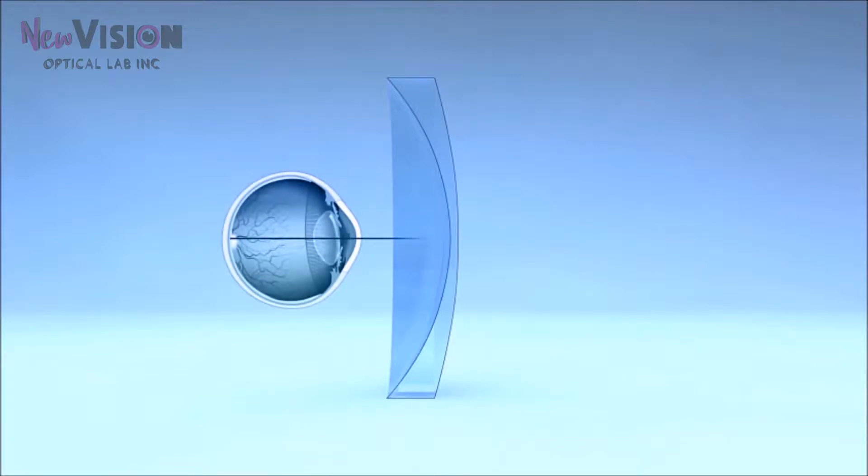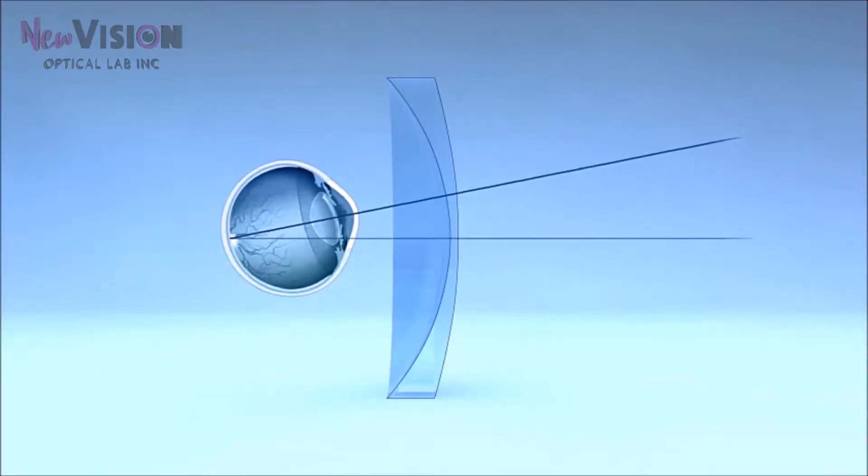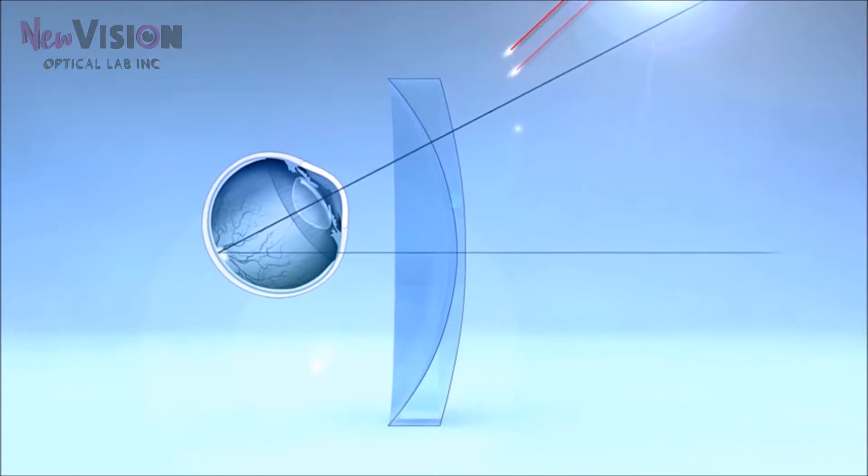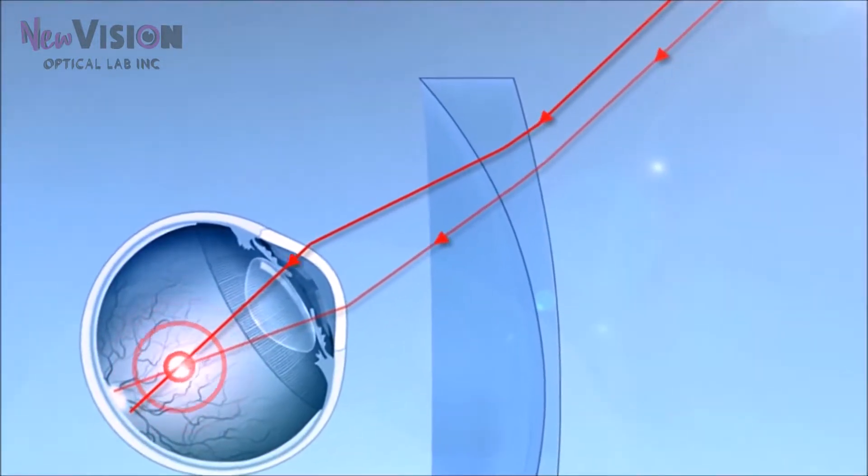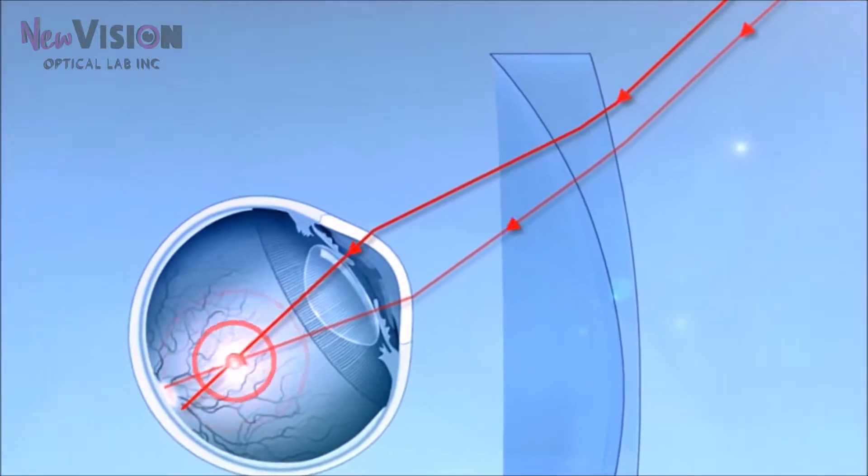Lens performance becomes lower as we look away from the optical center. This is a result of the oblique aberration that appears when light is refracted obliquely, which happens whenever we look in lateral gaze directions.